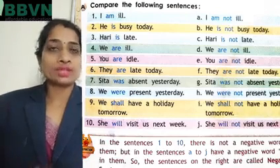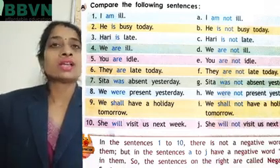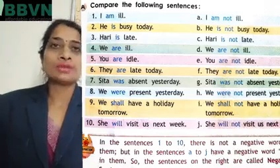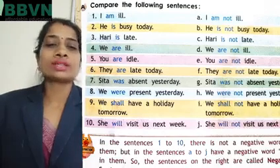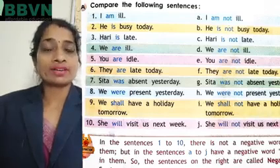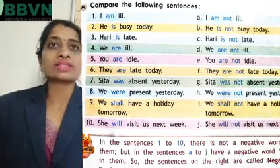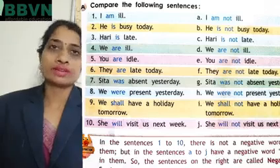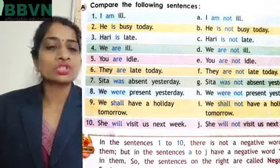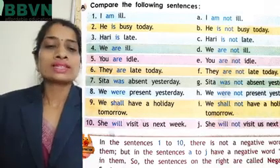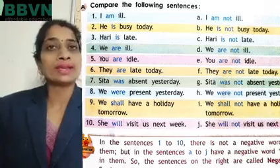So is tarah se aap positive sentence ko negative bana sakte ho. Jo bhi hamare verbs hote hain sentences mein — jaise 'is,' 'am,' 'are,' 'was,' 'were,' 'shall,' 'will' — to in ke baad 'not' laga kar aapne sentence ko negative bana sakte ho. The negative words 'not,' 'never,' 'no' — ye sare negative words hain jo hamare sentence ko negative banate hain. Sentences A to J have a negative word 'not' in them, so the sentences on the right are called negative sentences.